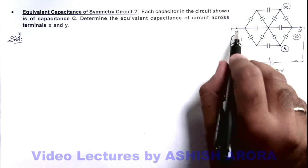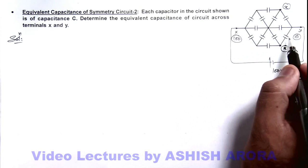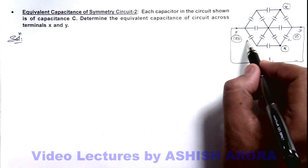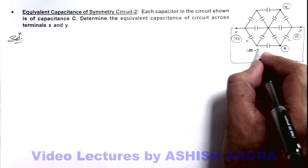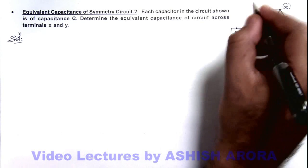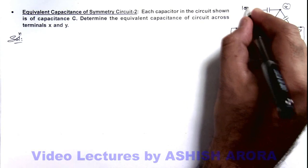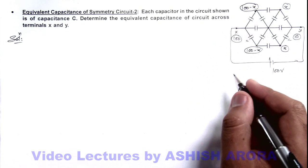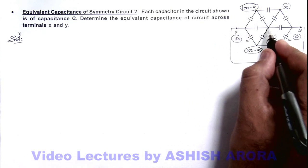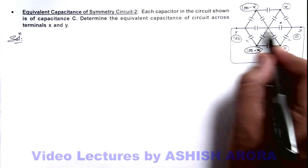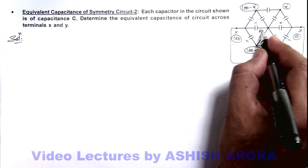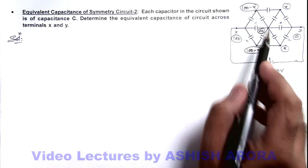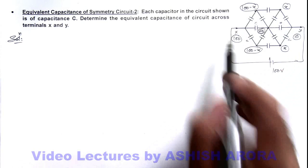Due to input and output symmetry, if the potential difference across one capacitor is X, across the corresponding one it must also be X. So the potential at those nodes must be 100 minus X, and by symmetry the other node will also be at 100 minus X. The potential at the middle point will be 50 volts, because of symmetry between the zero and hundred volt points.